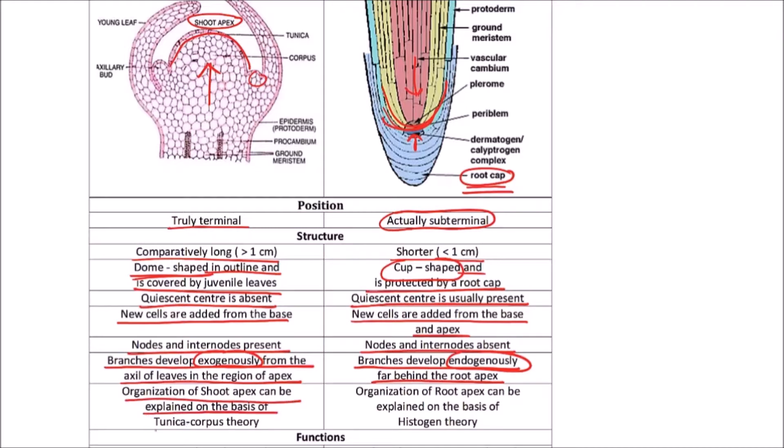The upper layer is tunica and the mass of cells is corpus. The organization of the root apex can be explained on the basis of the histogen concept, which we have already discussed in previous videos.